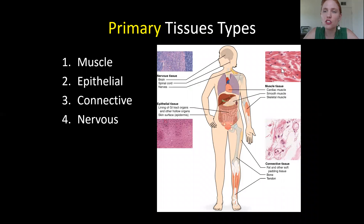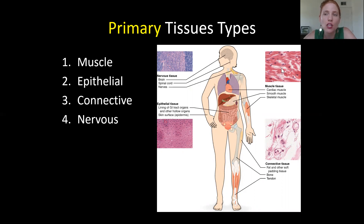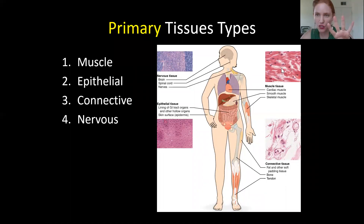The first thing I want to introduce is the idea of primary tissue types. Whenever you see the word 'primary,' that means one of four categories. These are categories, not specific tissue types — specific tissue types fit into these categories based on their characteristics. The four primary tissue types are muscle tissue, epithelial tissue, connective tissue, and nervous tissue.